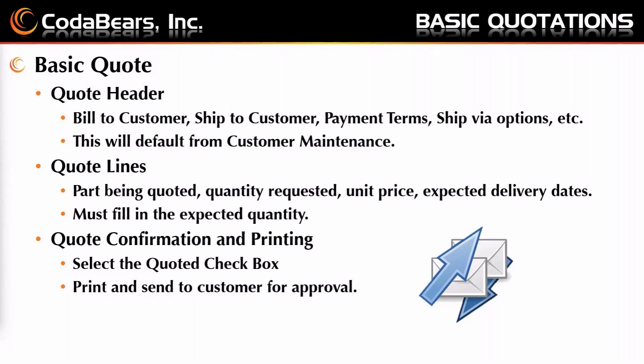We add quote lines — what's the part being quoted, what quantity is requested, unit price, expected delivery dates. You must fill in the expected quantity, and I'll show you that field in just a second. In order to send this to our customer, we select the 'quoted' checkbox, print it, and send it to the customer for approval. If we win the quote, we can come back and enter the information accordingly, and you can also pull this into a sales order once the customer accepts.